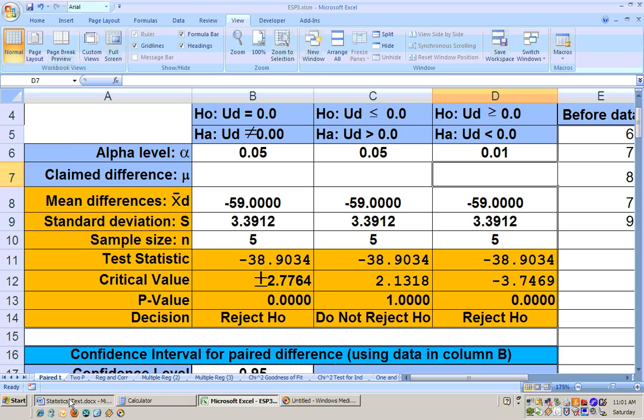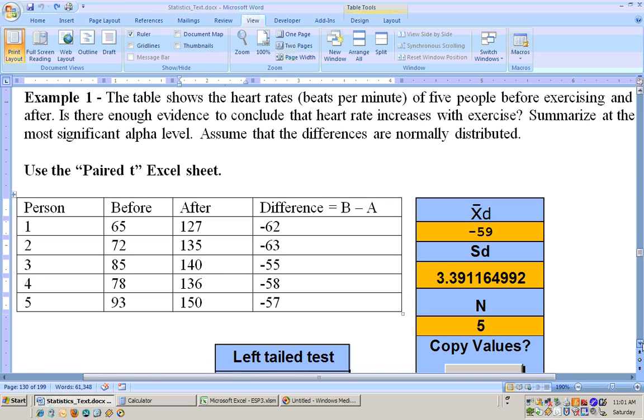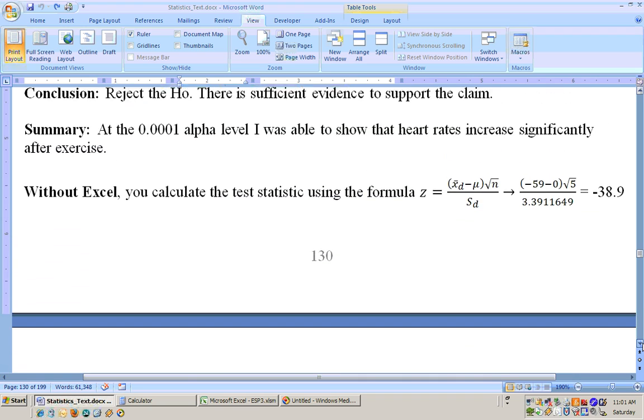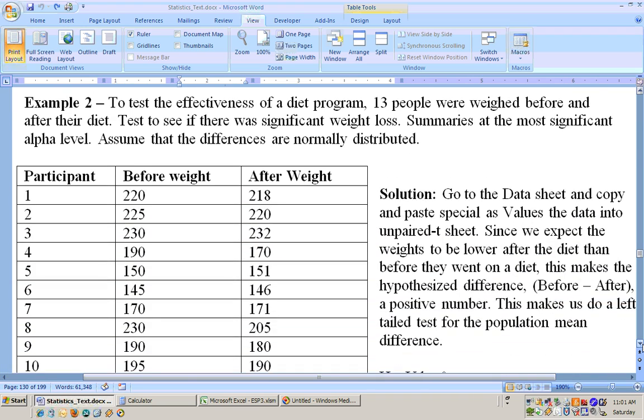Let's go on to the next example here. The next example is to see if a diet program worked. Before and after, and we want to see if there was significant weight loss. If there's weight loss, we would expect their after weight to be less than their before weight. That isn't true with everybody on a diet. This guy gained two pounds on the diet. But we would suspect that people would lose weight on a diet. So that way you would expect this number to be less than this number. And when you subtract these two, you get a positive number. So we're going to be doing a right-tailed test.